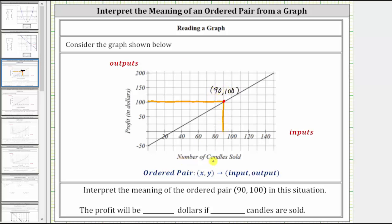Notice how the 90 represents the number of candles sold and the 100 represents the profit in dollars. So this tells us if 90 candles are sold, the profit is $100. Looking at the sentence below, we need to fill in the blanks. The sentence reads, the profit will be blank dollars if blank candles are sold. So we now know the profit will be $100 if 90 candles are sold.